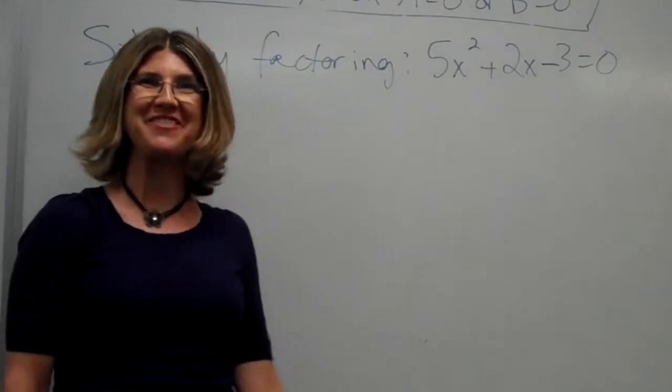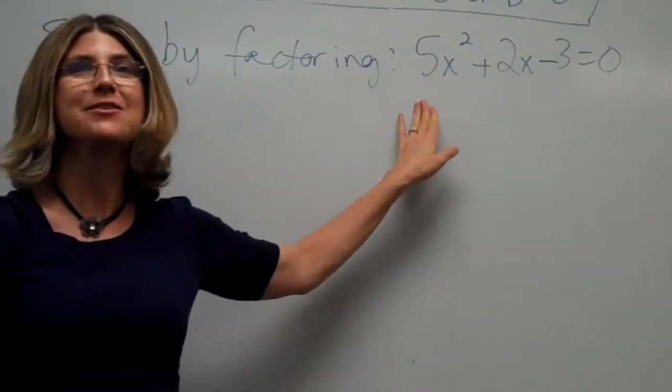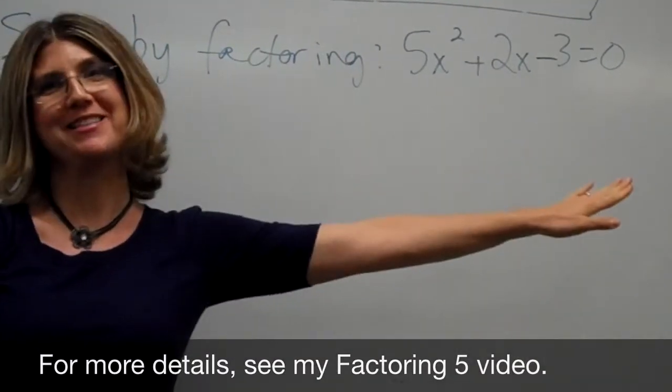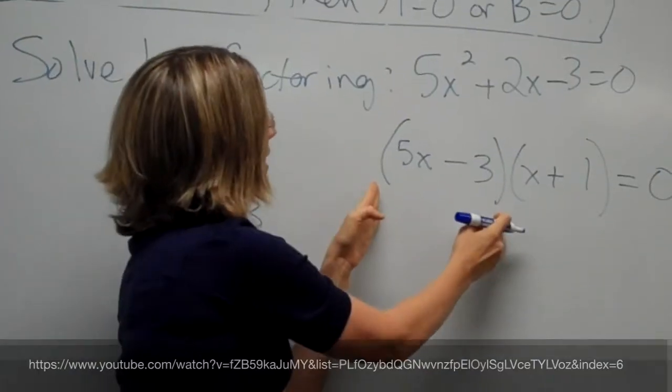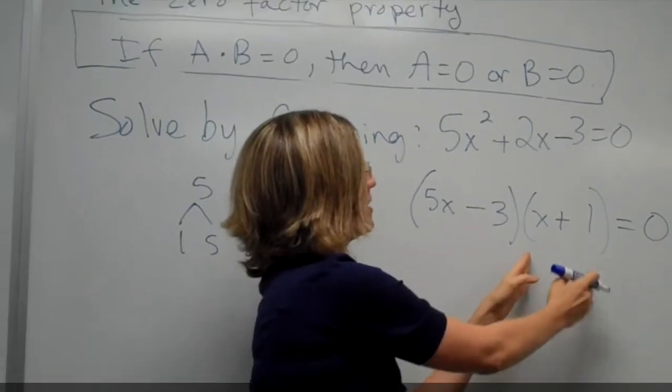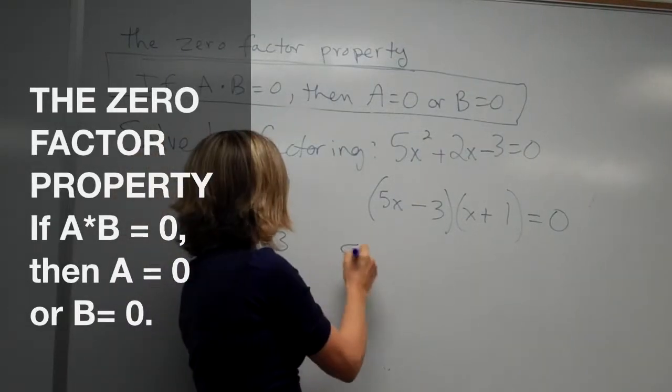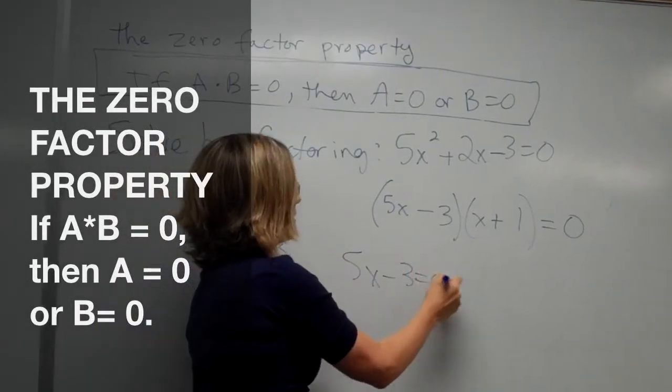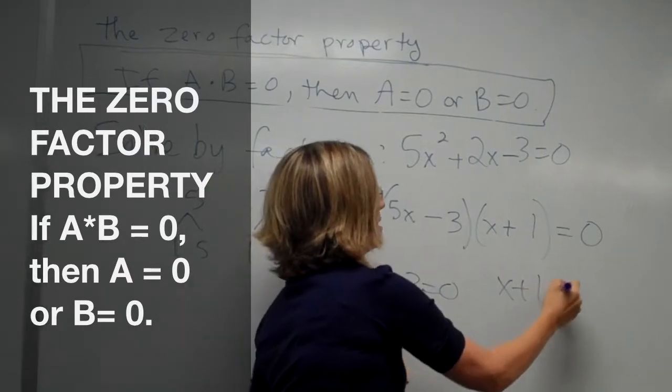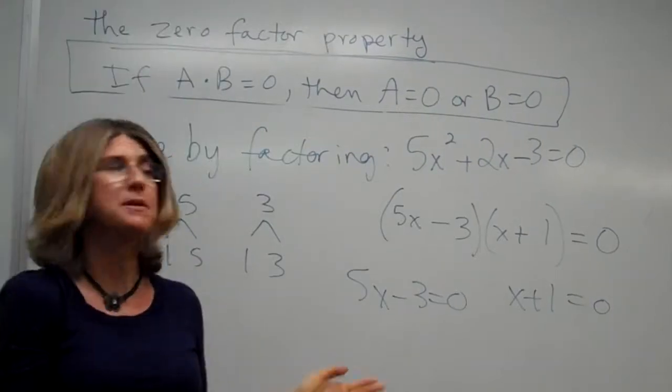Hi, superclass. Let's solve by factoring. Let's solve 5x squared plus 2x minus 3 is 0. So since 5x minus 3 times x plus 1 is equal to 0 by the zero factor property, either 5x minus 3 must be 0, or x plus 1 must be 0. Or I guess they could both be 0.